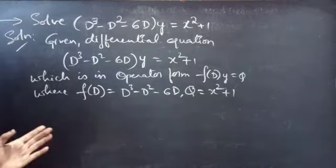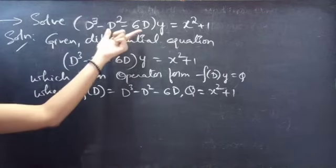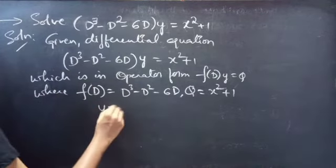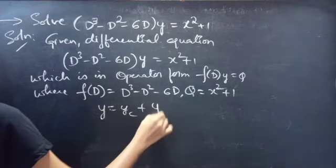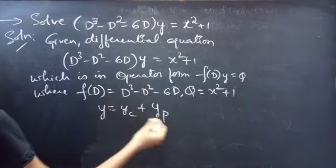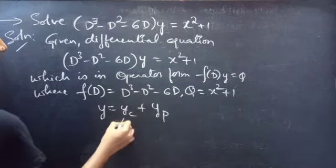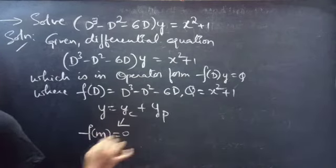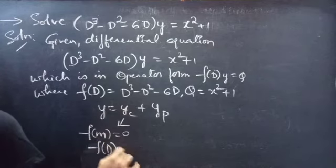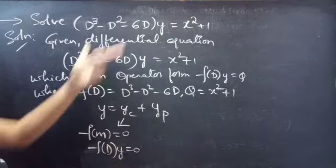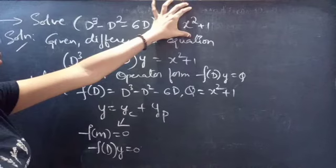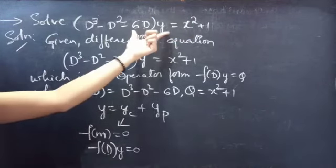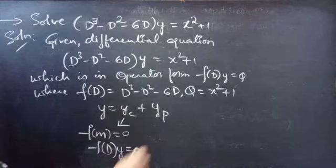Now we need to find the general solution to the given problem. The general solution is y = yc + yp, where yc is the complementary function and yp is the particular integral. We will find yc using the rules of the auxiliary equation of the homogeneous equation corresponding to the given non-homogeneous equation — simply by taking RHS to 0.